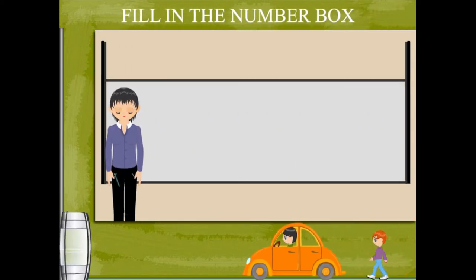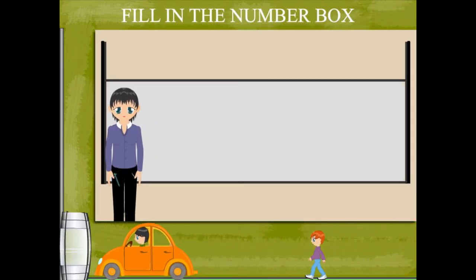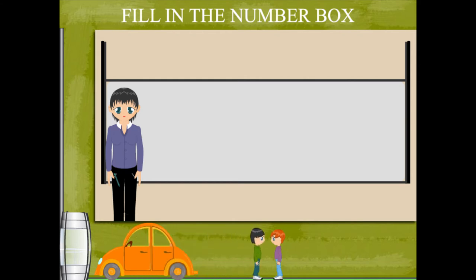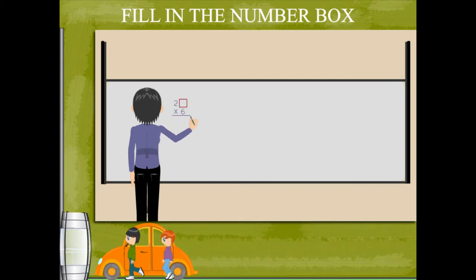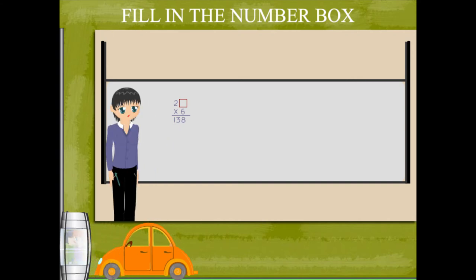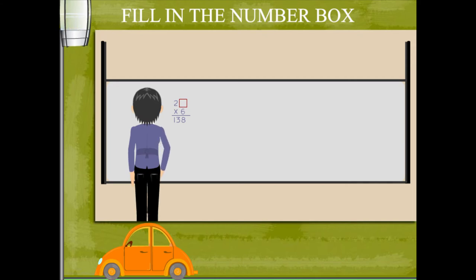Fill in the number box. Teacher Nancy writes some questions on the board with missing numbers. The first question is: blank 2 multiplied by 6, and the answer is 138. Nancy ma'am fills the blank with the digit 3.